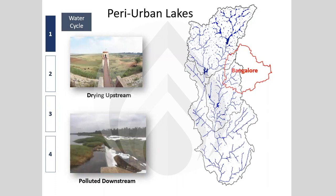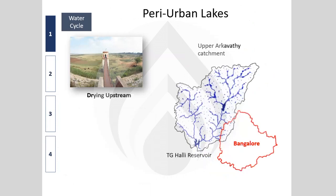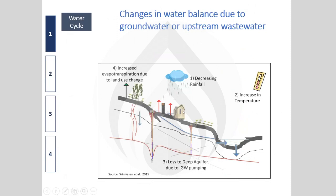In agricultural catchments, heavy groundwater overexploitation causes the water table to drop so much that it starts drawing water from the surface, drying out streams and lakes. In the Bangalore context, research found evidence of declining stream flow due to increased evapotranspiration and deep groundwater pumping — when the water table drops below stream level, groundwater no longer feeds the stream; instead, water moves from the stream into the aquifer, causing lakes and tanks to dry up.